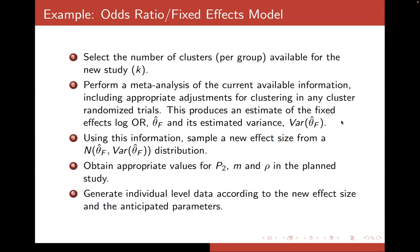Next, we're going to perform a meta-analysis of the current available information. So, we're going to perform the standard steps of a meta-analysis, including appropriate literature searching and including any appropriate adjustments for clustering in any cluster randomized trials. Now, once we have this, we're going to have an estimate of the fixed effect log odds ratio θ̂_F and its estimated variance.